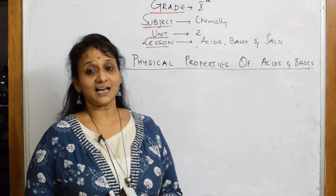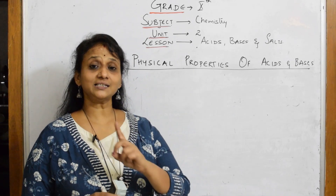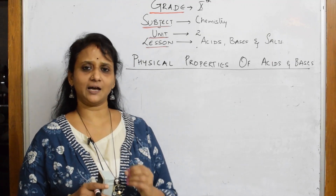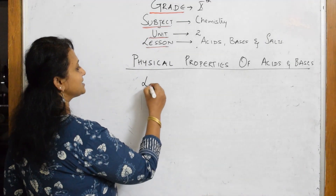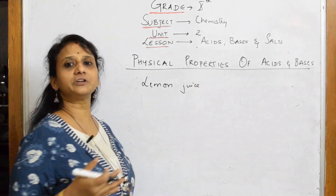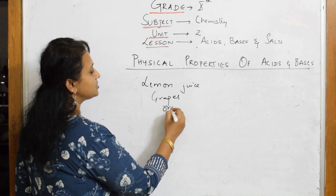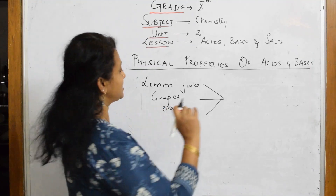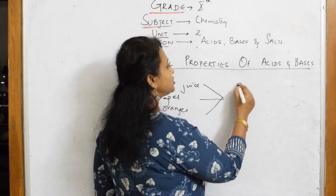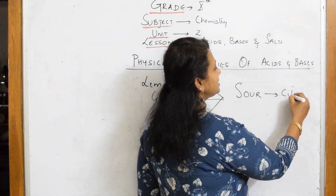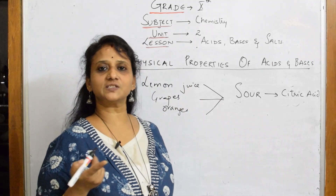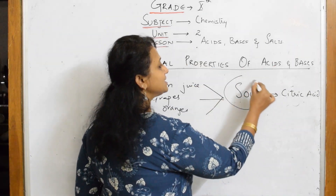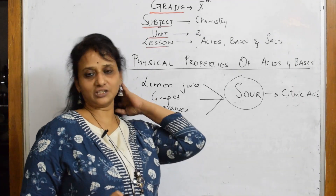Acids are the first important concept. Acids are those substances which are sour in taste — but remember, never taste chemicals. For example, lemons have citric acid. Grapes, oranges — all are sour in taste because of the presence of citric acid. Lemon juice, grape juice, or oranges taste sour. So the first physical property of acids is: acids are sour in taste.